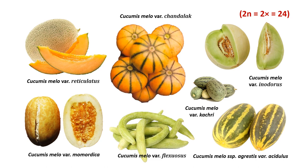Another important second variety is Cucumis melo var. acidulus, also called Mangalore melon. It is generally consumed as a vegetable, mostly used in summer in Rajasthan. One of its botanical varieties, Cucumis melo var. kachri, is commonly cultivated and sometimes grows wild. They are consumed at the ripe stage as vegetables. Most of the northern plain varieties are Cucumis melo. Another globally important botanical variety is Cucumis melo var. reticulatus.